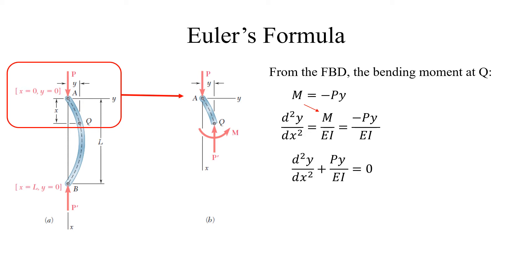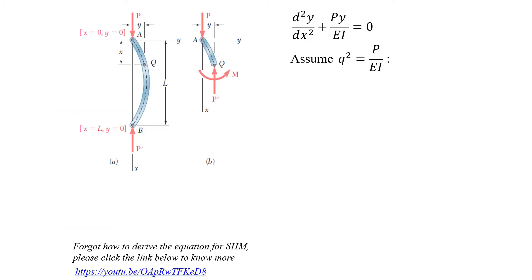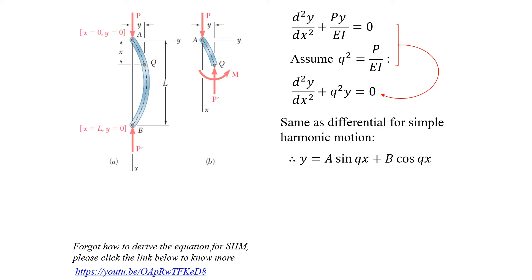Assuming q² equals P over EI and substituting into the equation above, we get d²y/dx² plus q²y equals zero. This is the same form as the differential equation for simple harmonic motion. The above equation yields the solution y equals A·sin(qx) plus B·cos(qx). If you need to recall how to derive the equation for simple harmonic motion, click the YouTube link below.